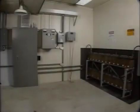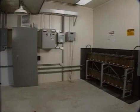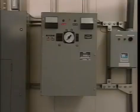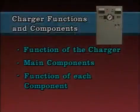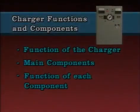A DC control system is a critical emergency power source for substation devices that protect and control transmission and distribution systems. The battery charger is a key part of the DC control system. This first part of the program will look at the functions and components of a typical substation battery charger.